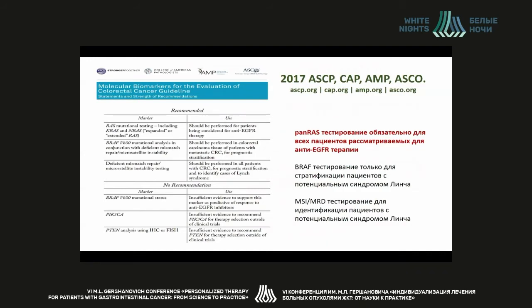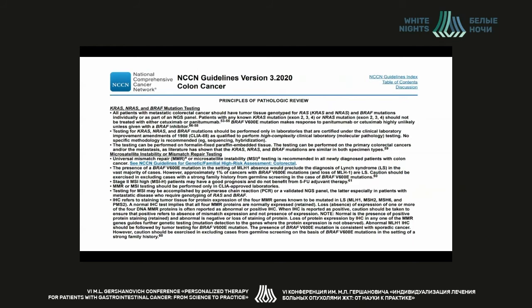The last guidelines on clinical molecular profiling were published in 2017. The markers included are different genes: BRAF, KRAS, HRAS, and NRAS. There are restrictions to identify patients suffering from Lynch syndrome. During the last three years, there have been changes in the landscape of molecular genetic testing for many oncological diseases, and colorectal cancer is not an exclusion.